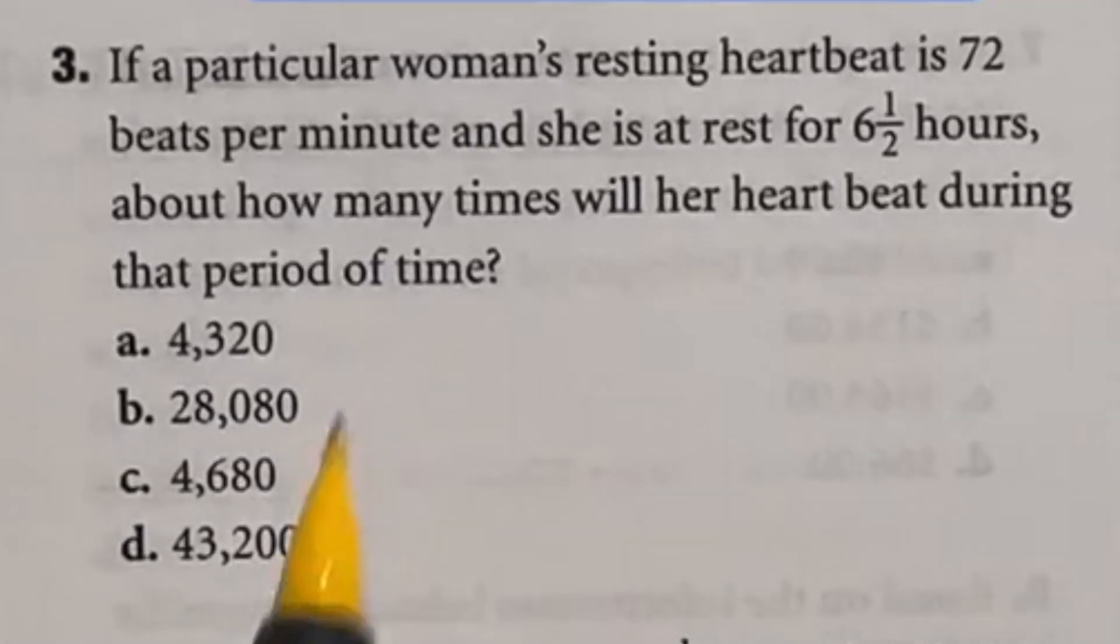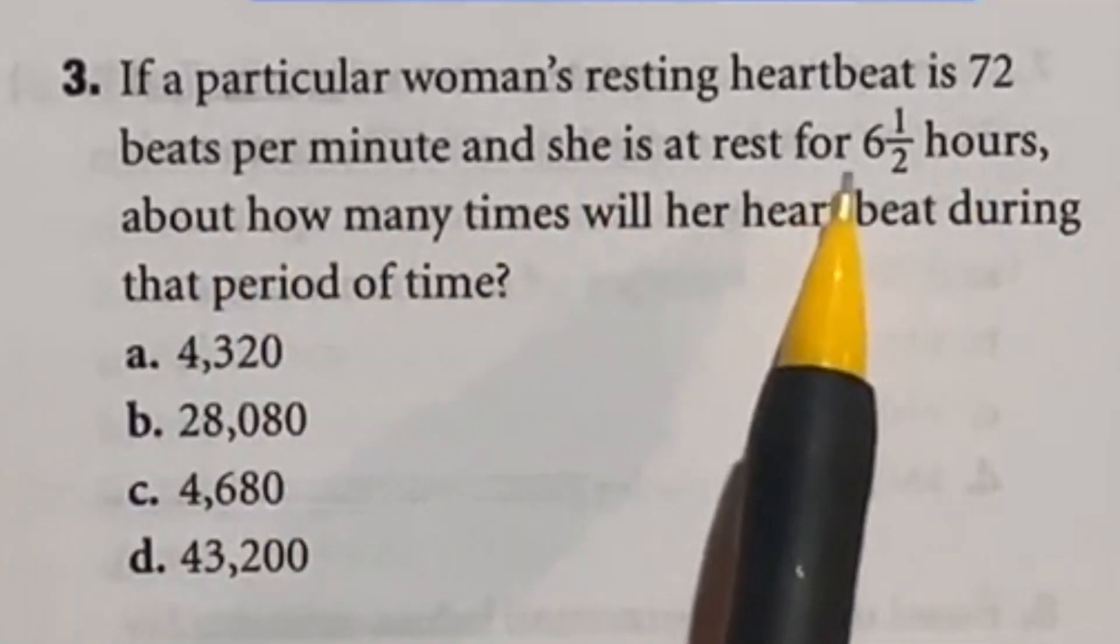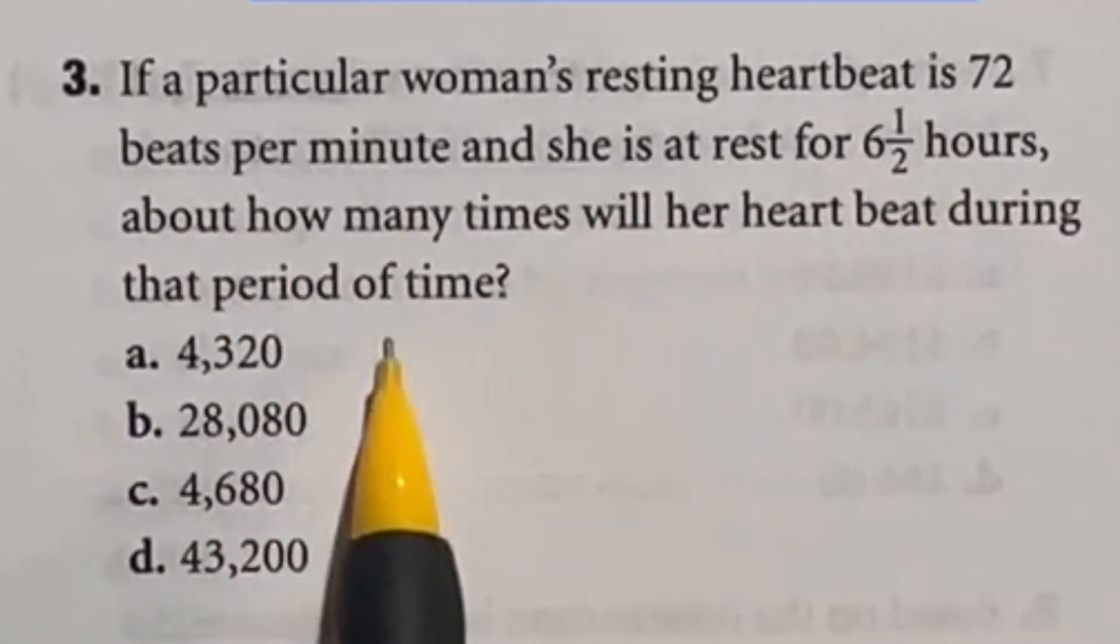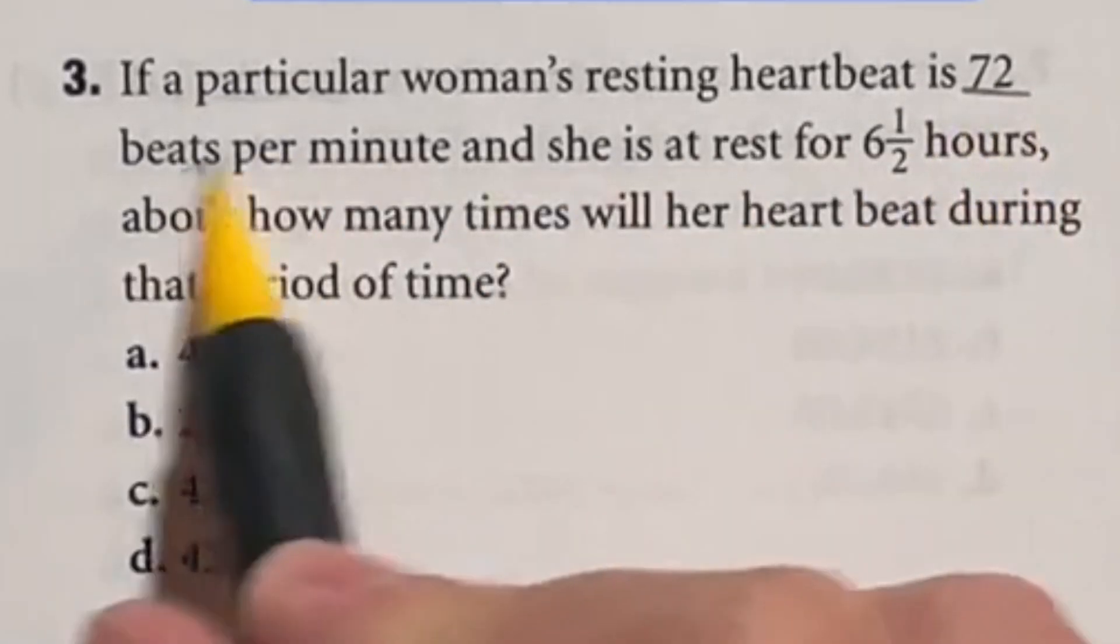Sometimes the name of the game on this test is speed. So it says here that a woman's resting heartbeat is 72 beats per minute. She's at rest for six and a half hours. So how many times did her heartbeat in that case? Well, first off, don't forget we're going from minutes here to hours.